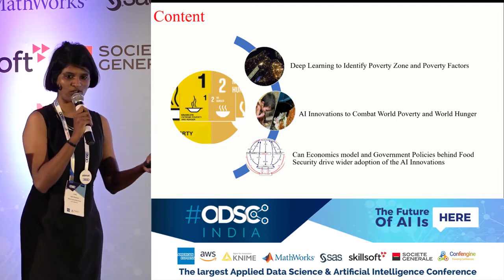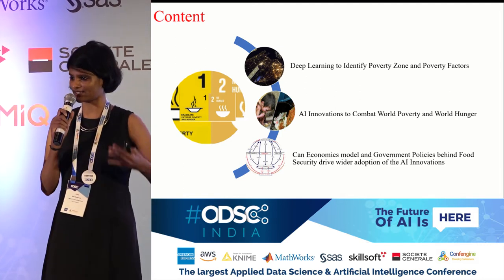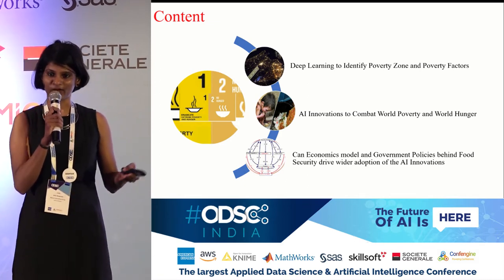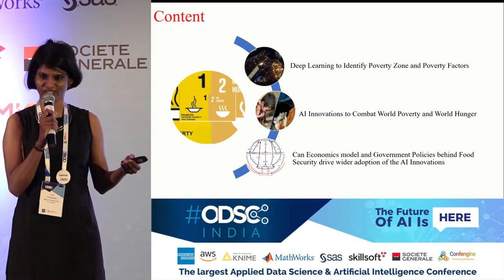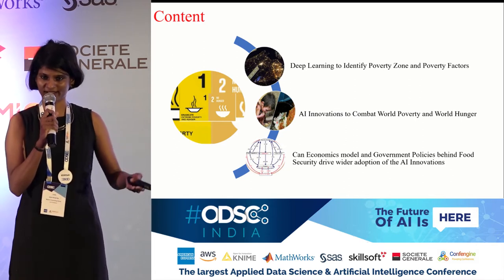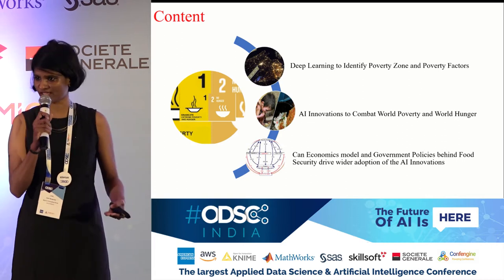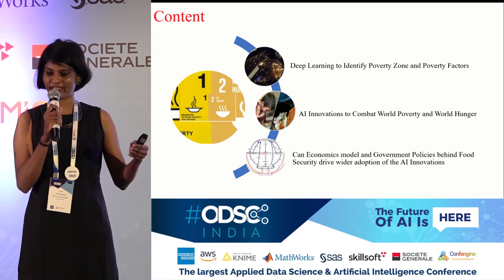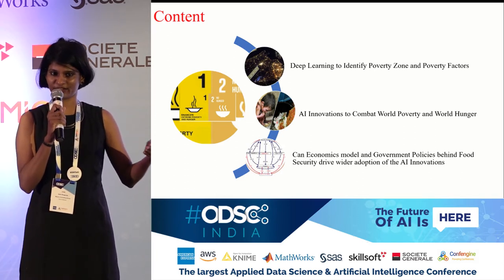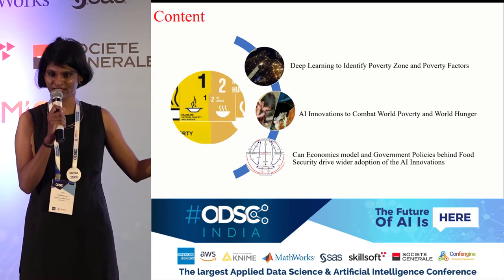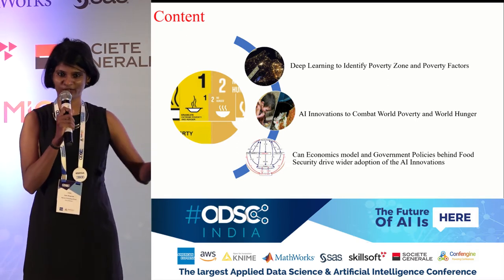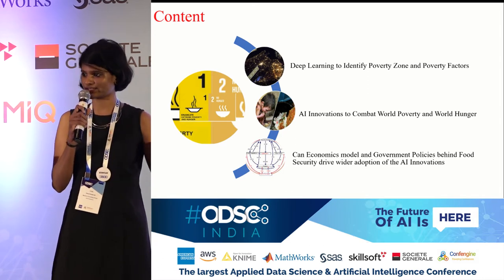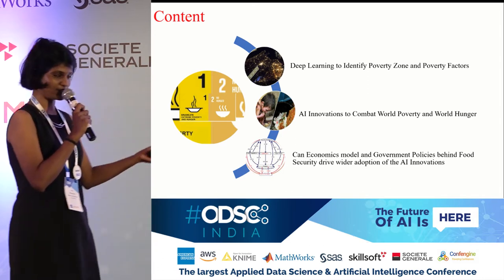The second part is, once you've identified these zones, how can you use innovations in these areas to combat hunger and poverty? The third part covers what government can do with AI and ML insights — how to come up with better economic and technology policies, better food security laws, and enable wider adoption of AI techniques at scale.